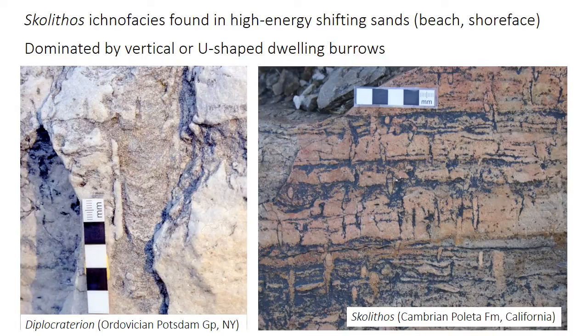Ichnofacies are named after one of the characteristic trace fossils found in the assemblage. The Skolithos ichnofacies is characterized by vertical burrows — tubular or U-shaped burrows, like Skolithos in the bottom right, which is a simple vertical tube, or Diplocriterion, a U-shaped burrow with features called spreitae. Spreitae are faint lines marking the former burrow position as the organism adjusted its position relative to the sediment surface. The Skolithos ichnofacies is typically found in high-energy areas with shifting, unstable, sandy substrates — beach or shoreface environments.